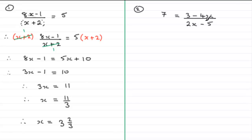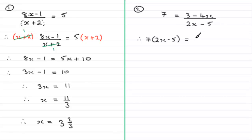Welcome back. With this one, what we've got to do is remove the denominator 2x minus 5 by multiplying both sides by 2x minus 5. So we have 7 multiplied by (2x minus 5), and on the right-hand side the fraction multiplied by (2x minus 5) — the 2x minus 5 cancels — leaving 3 minus 4x. Expanding the bracket: 7 times 2x is 14x, and 7 times minus 5 is minus 35, giving 14x minus 35 equals 3 minus 4x.